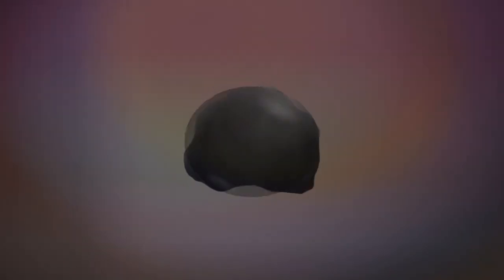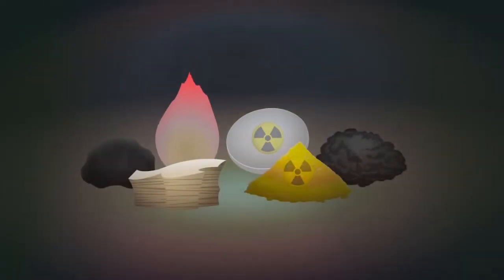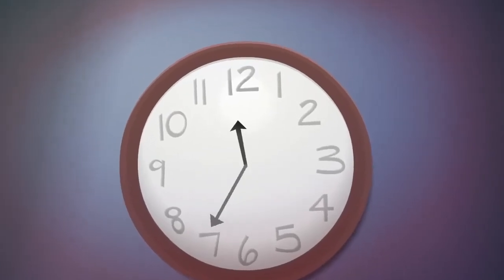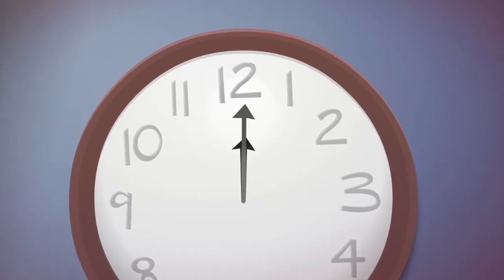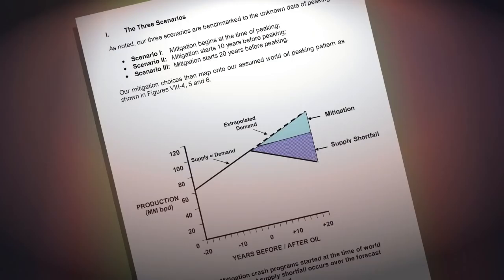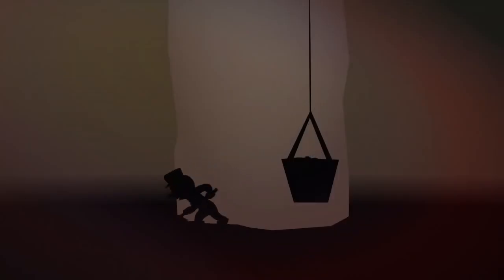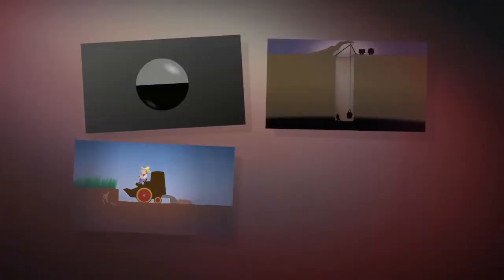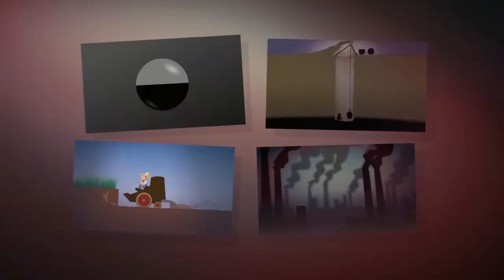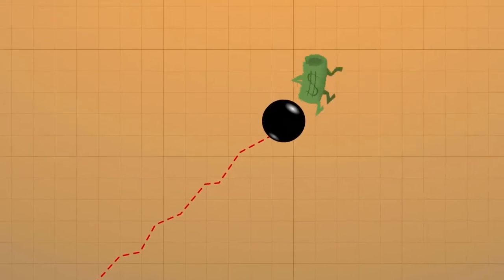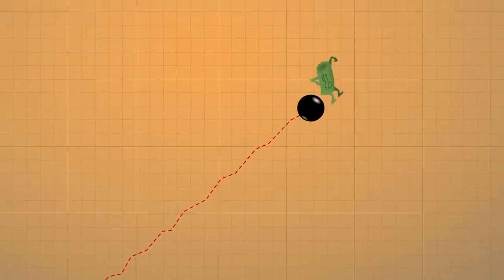Many economists believe that the free market will substitute one energy source with another through technological innovation. However, the main substitutes to oil face their own decline rates. Substitution also fails to account for the time needed to prepare for a transition. The US Department of Energy's Hirsch report estimates that at least two decades would be needed to prepare for the effects of peak oil. The issues of energy shortages, resource depletion, topsoil loss and pollution are all symptoms of a single larger problem: Growth. As long as our financial system demands endless growth, reform is unlikely to succeed.